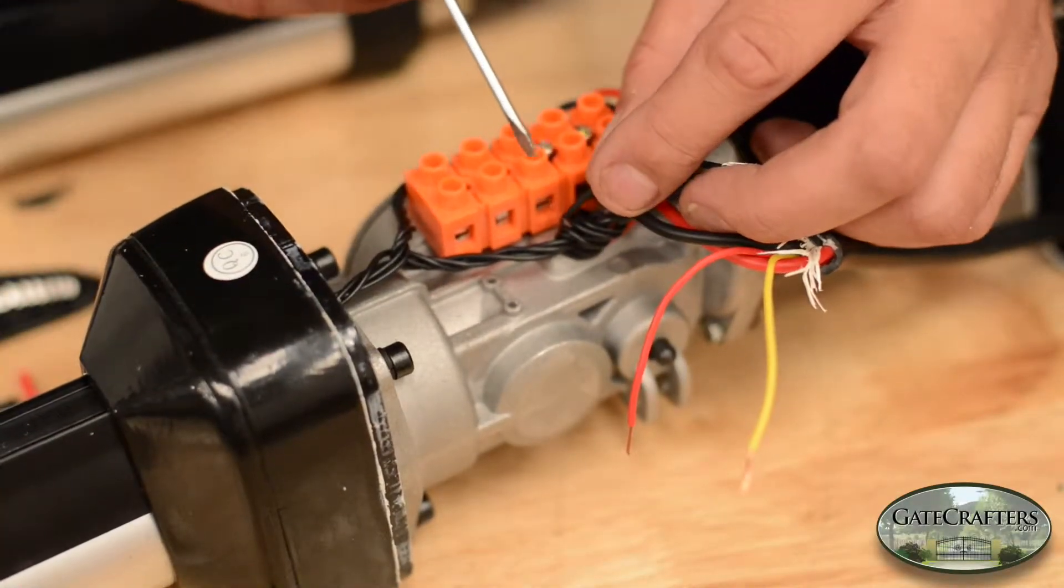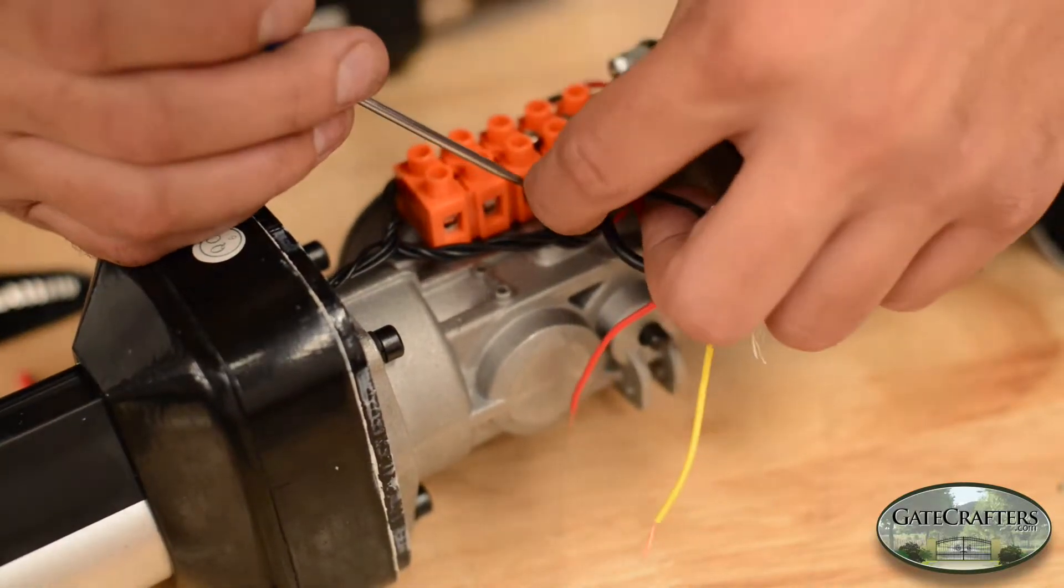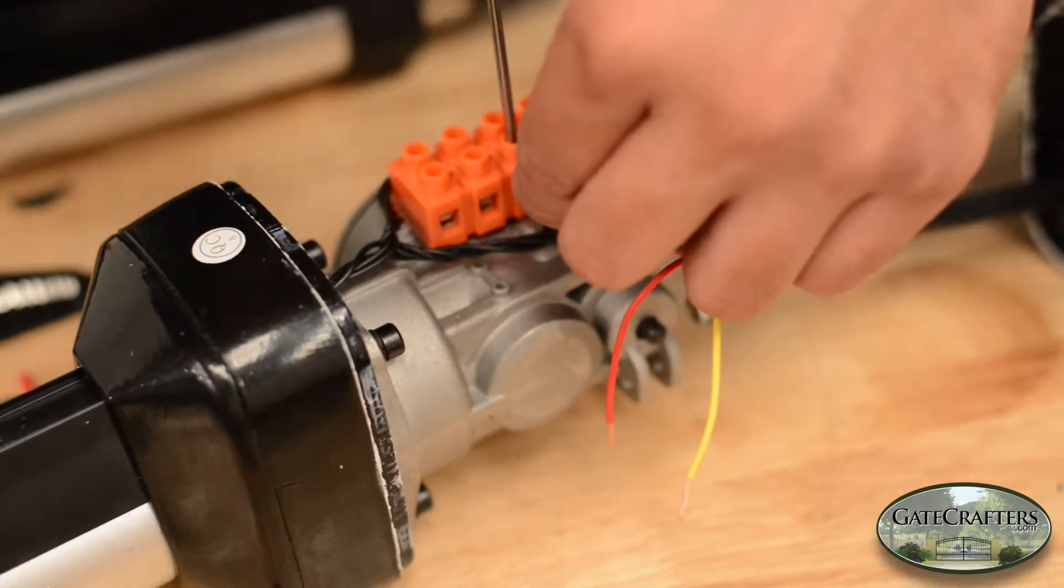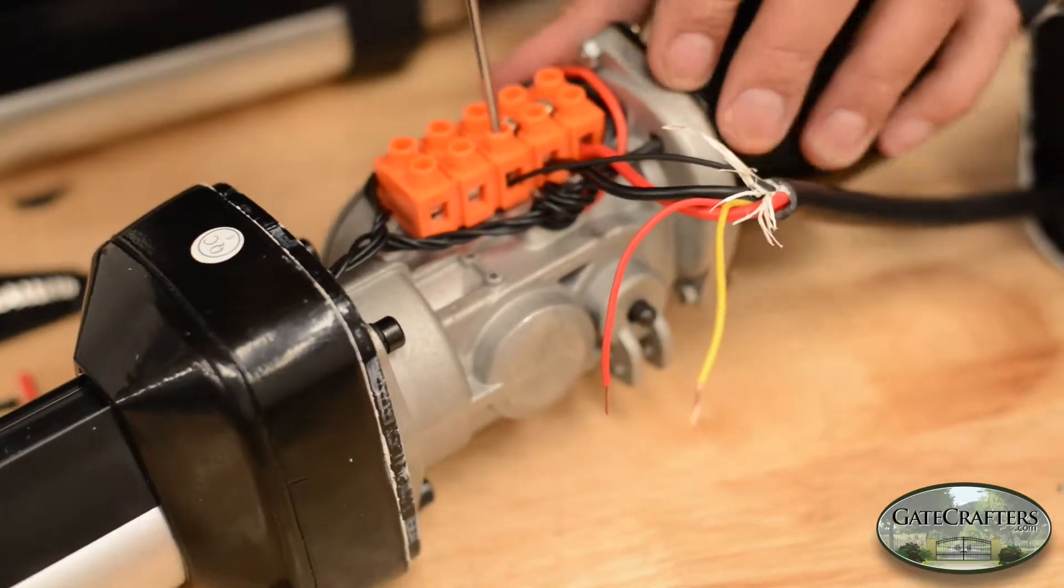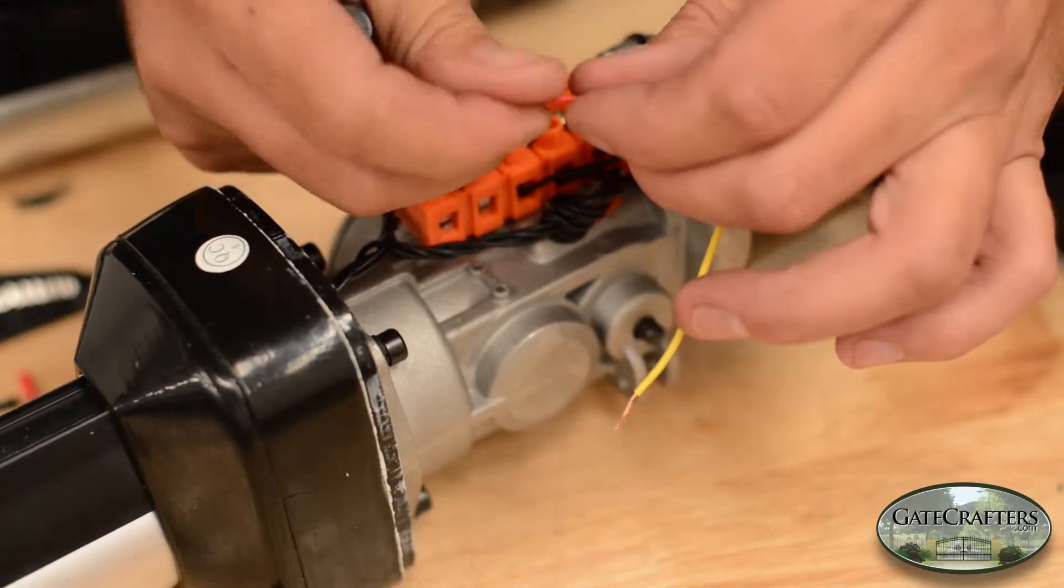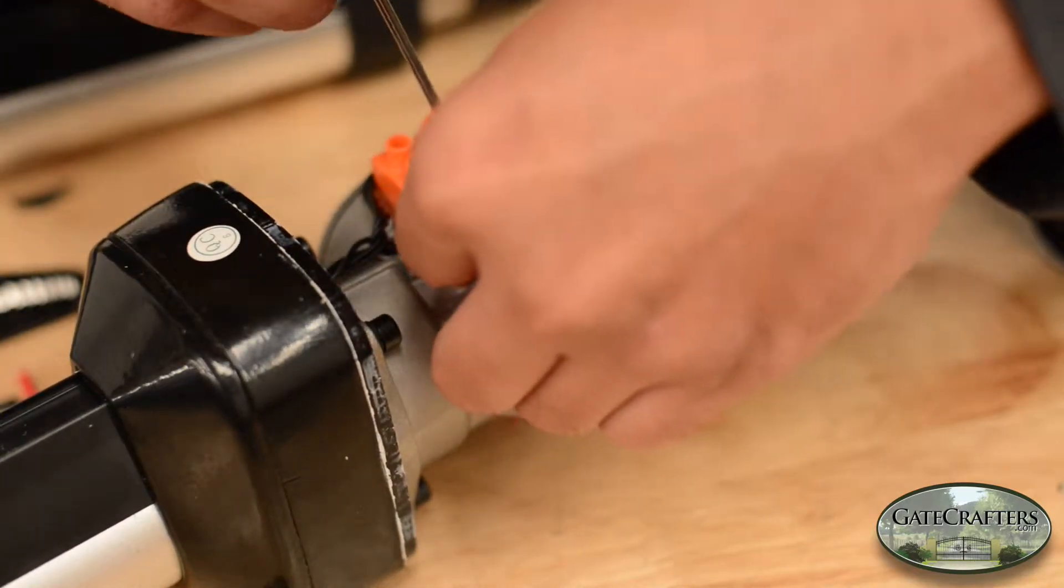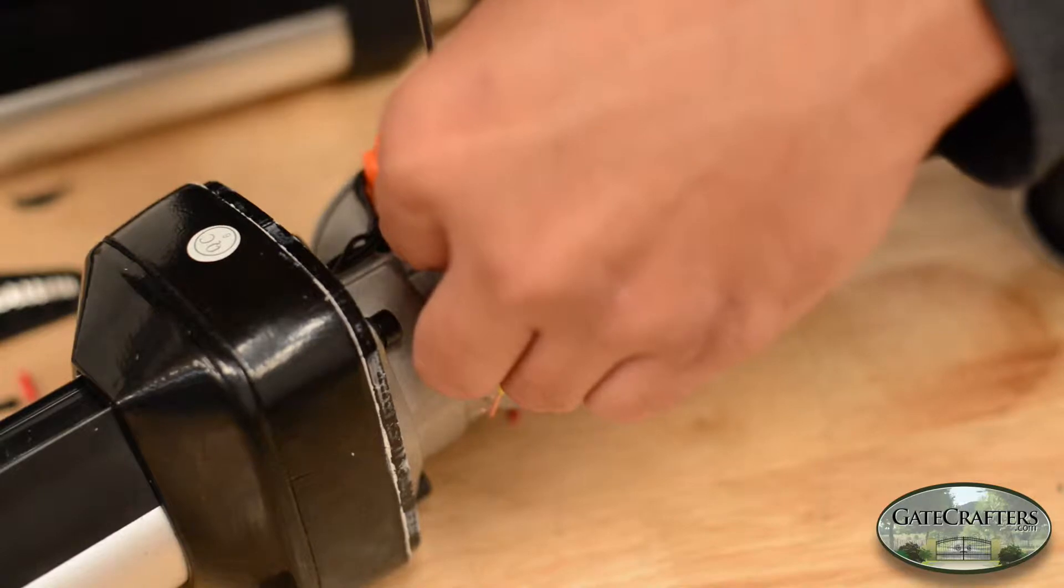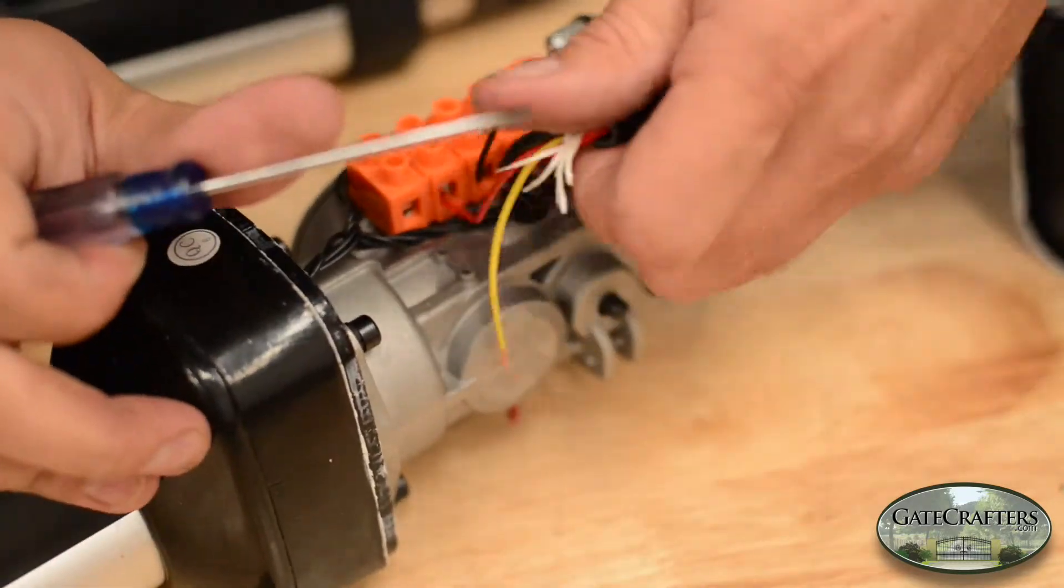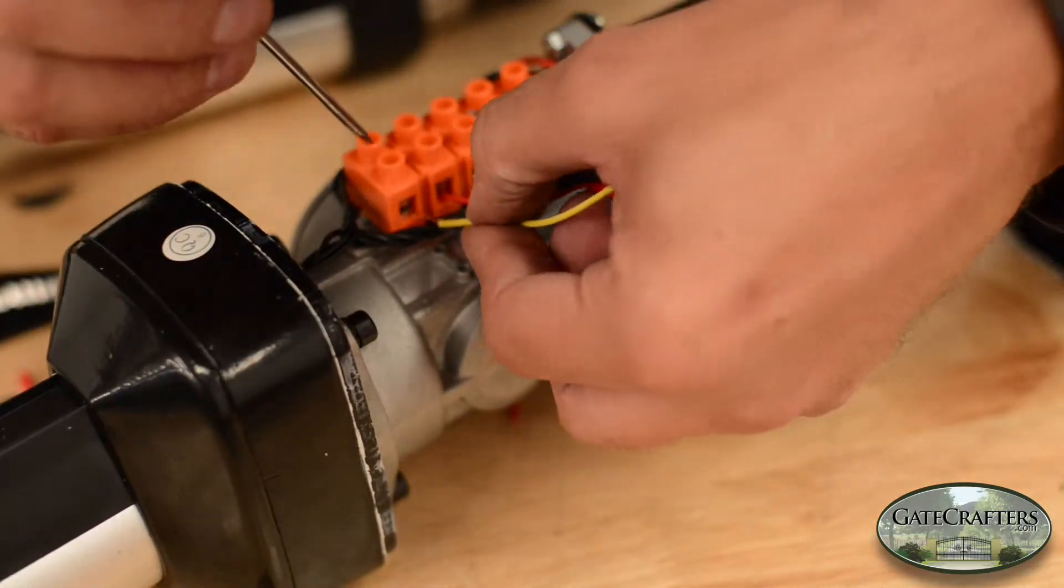Remember that they have to go in a specific order, so it has to go black, red, and then yellow. Red is your common, black is the extended limit. In most cases, that's the closed limit because the arm is extended while it's closed. So we'll put these wires in, and then we'll do a little check to make sure we did everything correctly. Remember to give a little tug on the wire, make sure you got a good connection, make sure it's making a metal to metal connection.